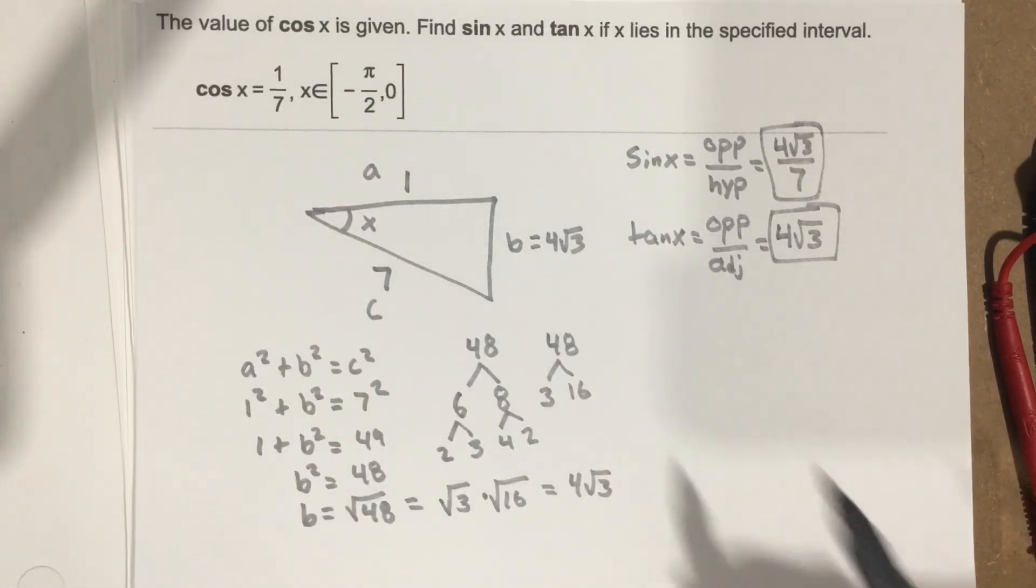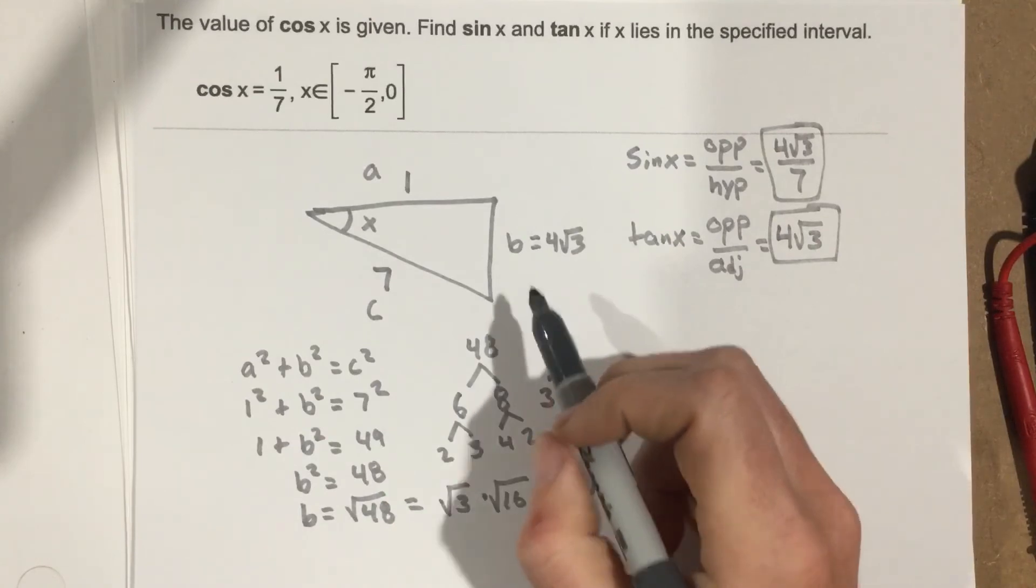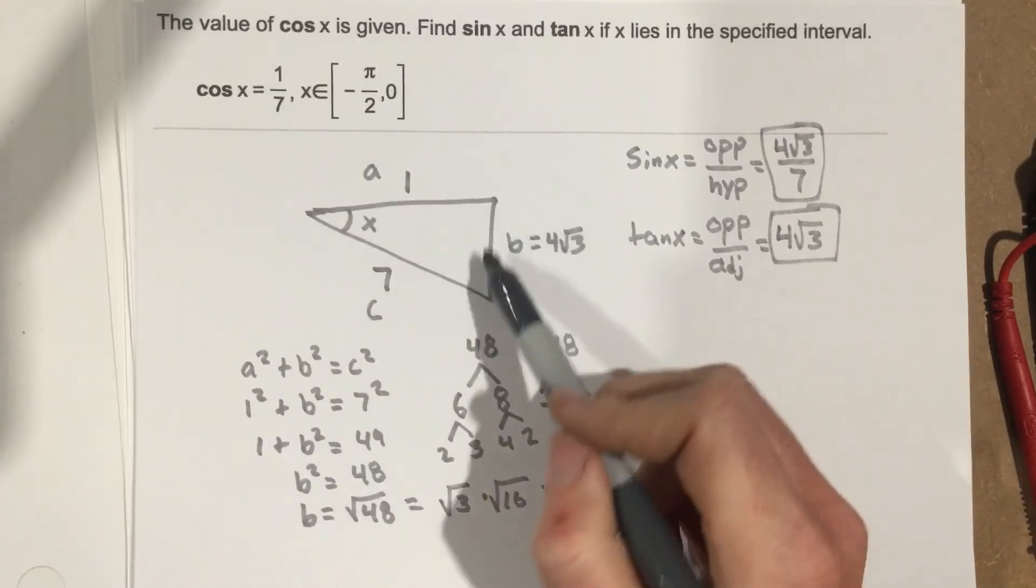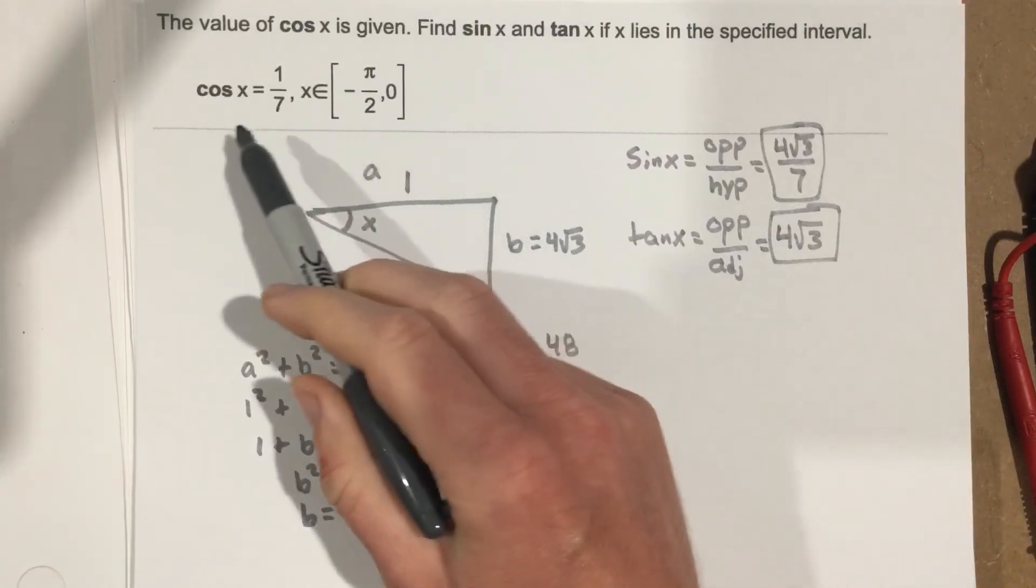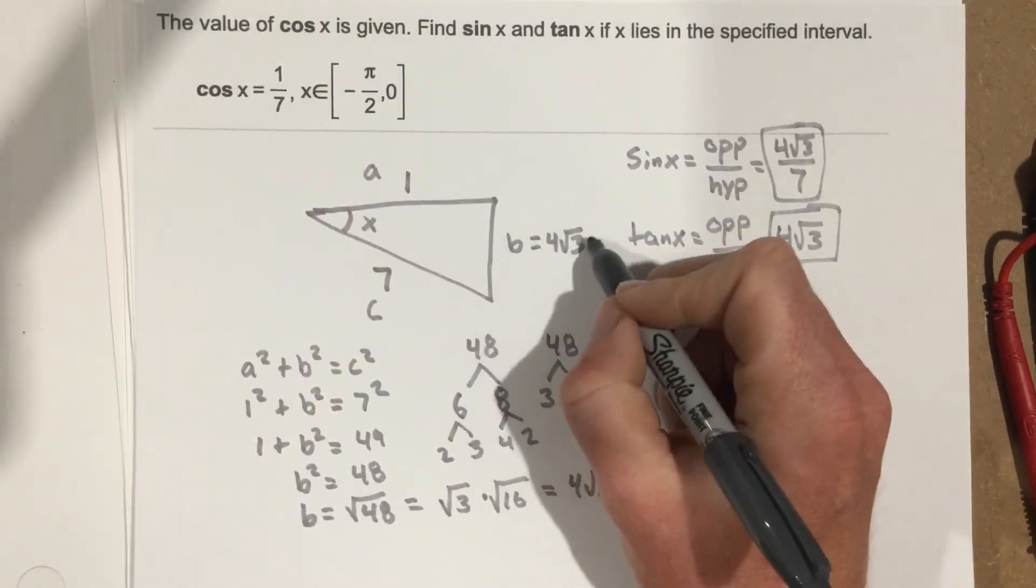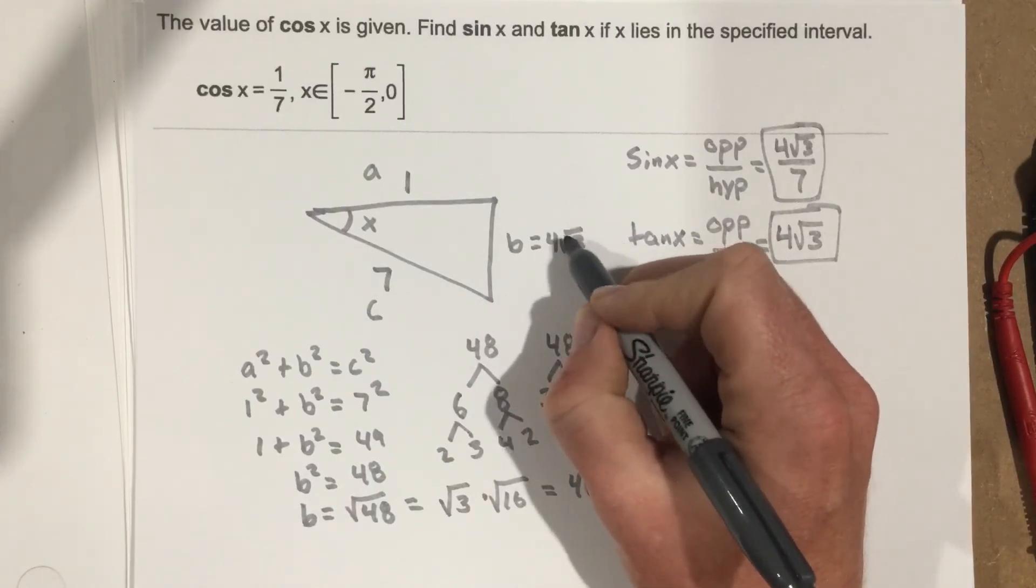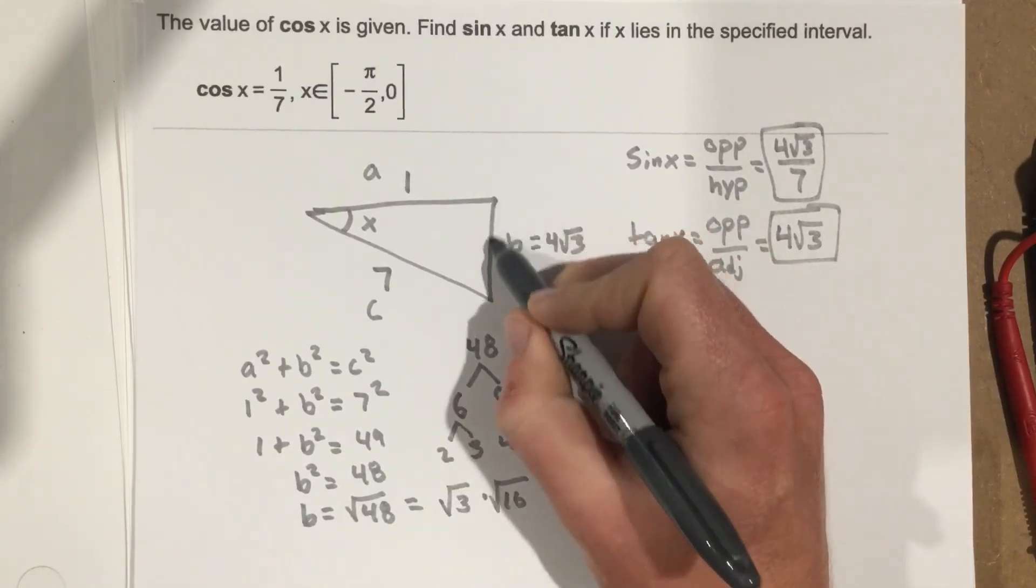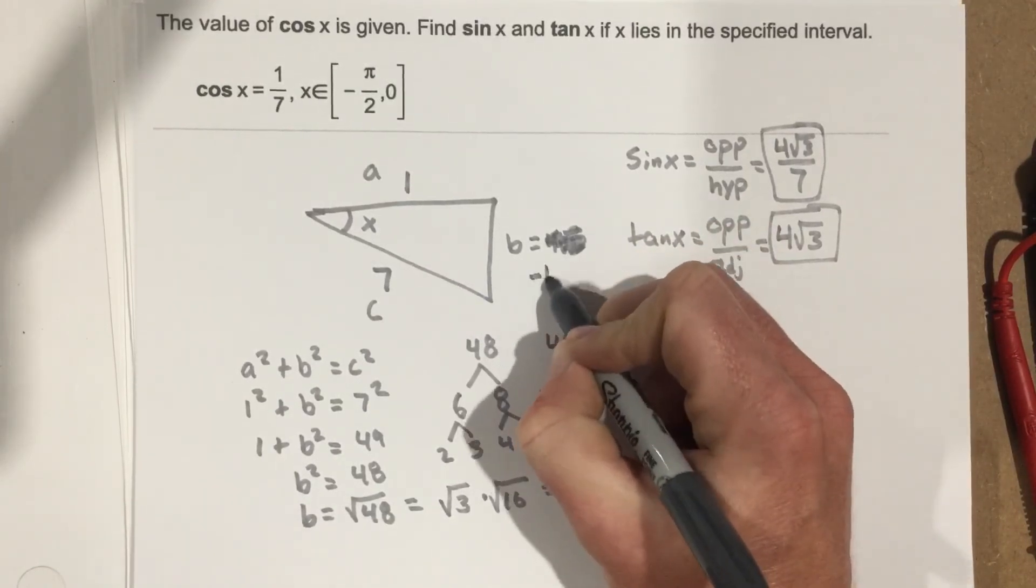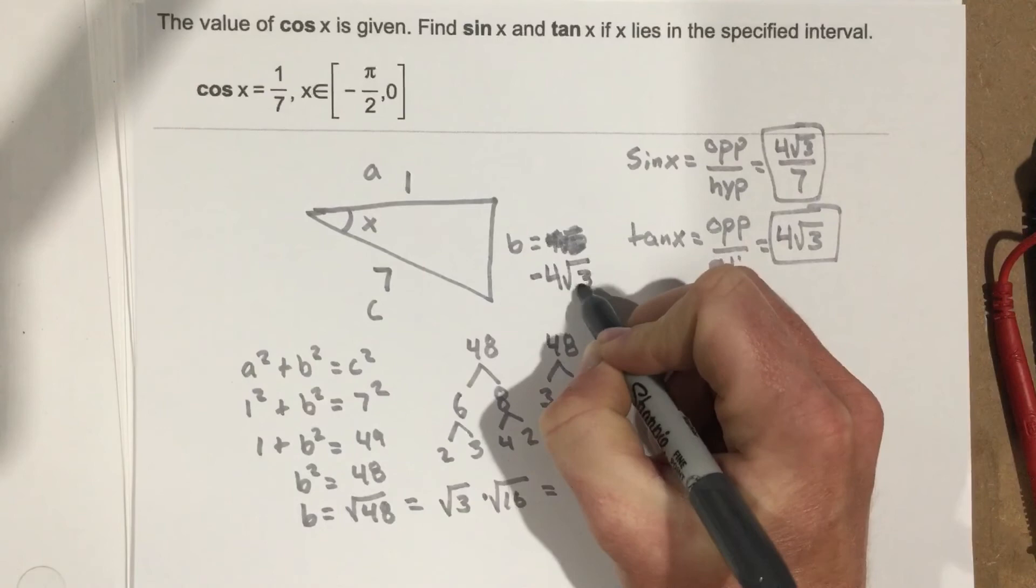I made one slight mistake that I just caught. Now, because we're in quadrant 4, I screwed up a little bit. This is not going to be 4 root 3 because we're down here. This is actually going to be negative 4 root 3. So I'm going to write that as negative 4 root 3 here.